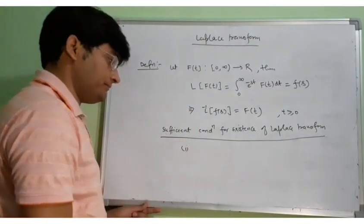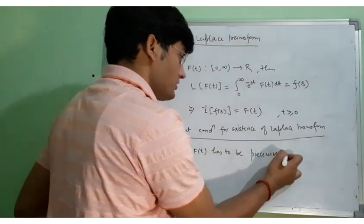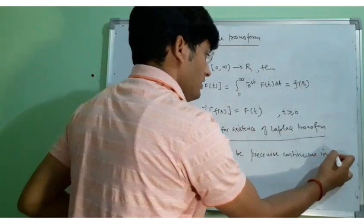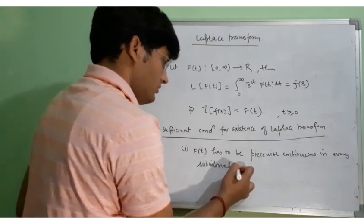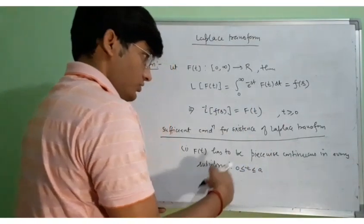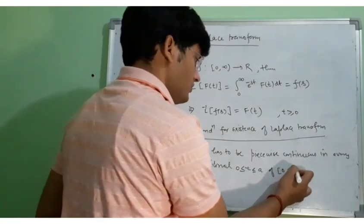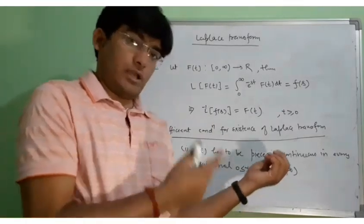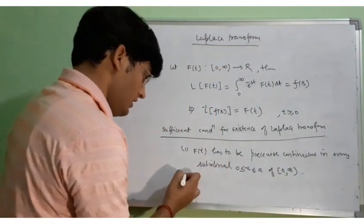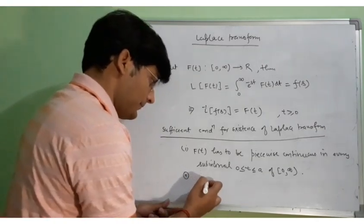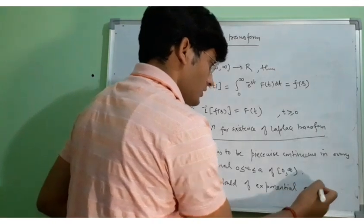There are two sufficient conditions for the existence of the Laplace transform. The first condition is that the function F(t) has to be piecewise continuous in every sub-interval — we can say sectionally continuous. The points at which we have discontinuity are known as jump discontinuity. The second condition is that F(t) should be of exponential order.